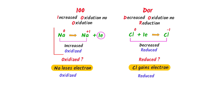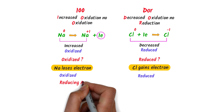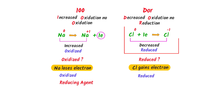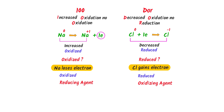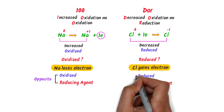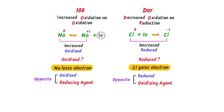Sodium is oxidized by chlorine because chlorine forces sodium to lose electrons, so we call sodium the reducing agent. Secondly, chlorine is reduced by sodium because sodium forces chlorine to accept electrons, so we call chlorine the oxidizing agent. The easy trick is to use opposite words: sodium is oxidized, so it is the reducing agent; chlorine is reduced, so it is the oxidizing agent.